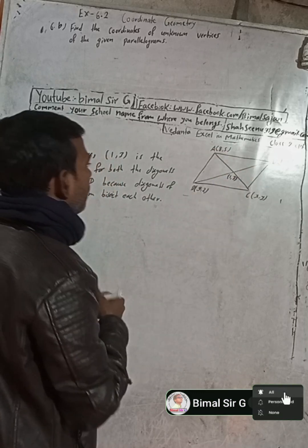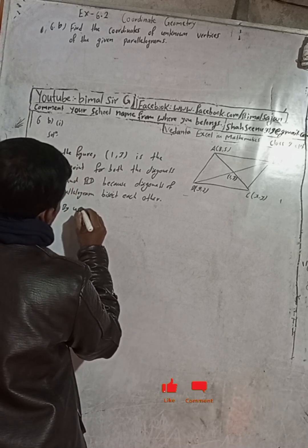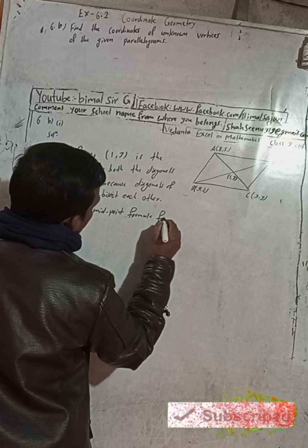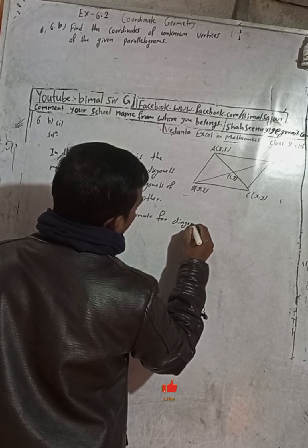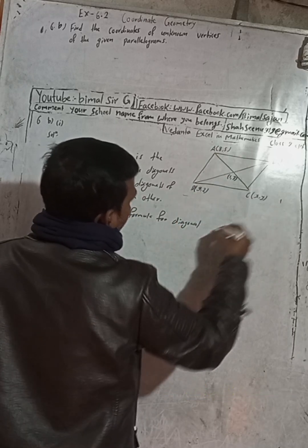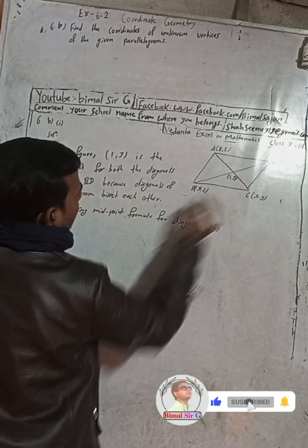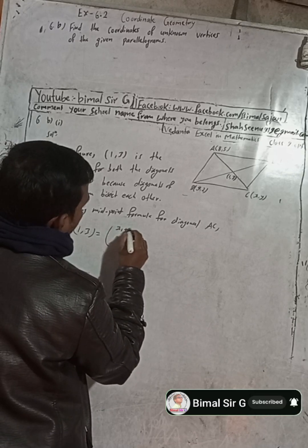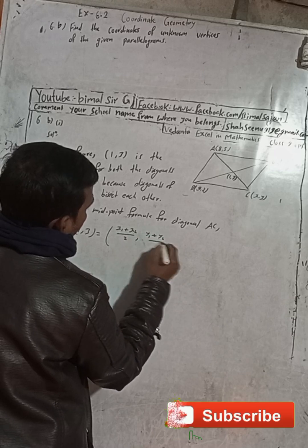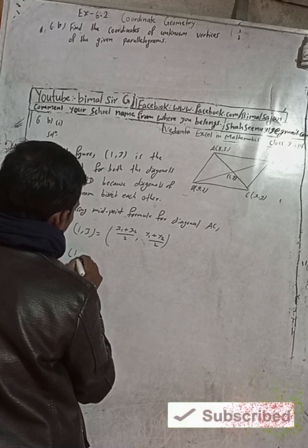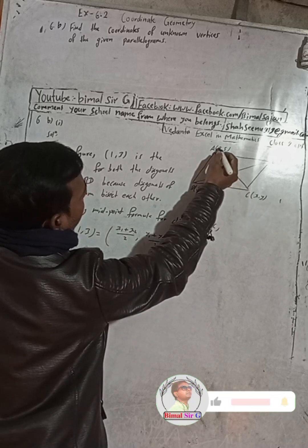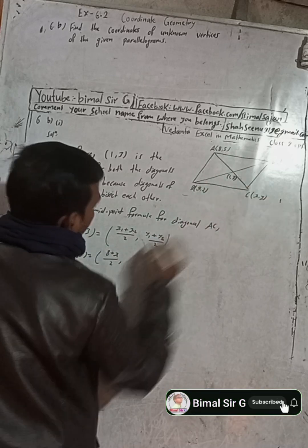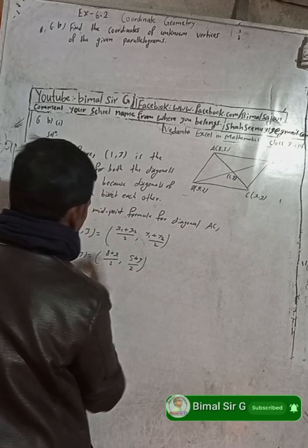We cannot apply this directly, but by using the midpoint formula for diagonal AC: the midpoint is (1, 3), so 1 comma 3 is equal to x1 plus x2 by 2, comma y1 plus y2 by 2. For AC, this gives us 1 comma 3 equals 8 plus x by 2, comma 5 plus y by 2.